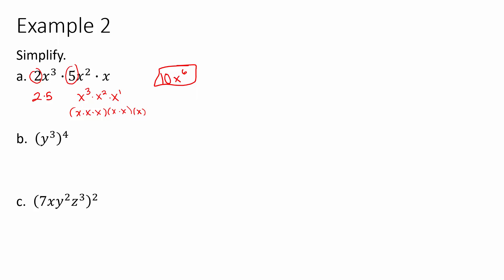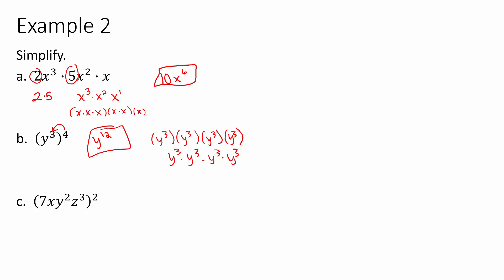For part b, we have y cubed raised to the fourth power. When we see parentheses, we multiply exponents: four times three gives us y to the twelfth. Alternatively, you could write out y cubed four times and add the exponents — three plus three plus three plus three equals twelve. Either way, the answer is y to the twelfth.